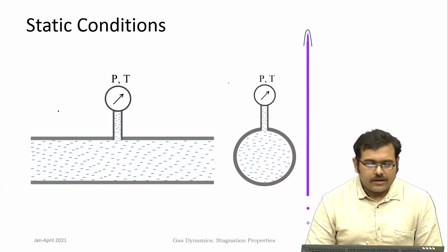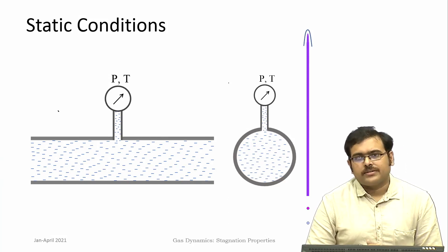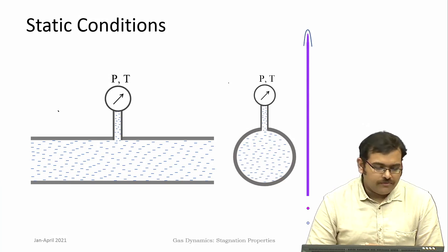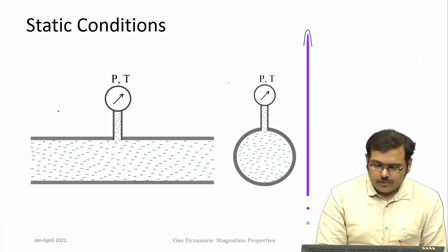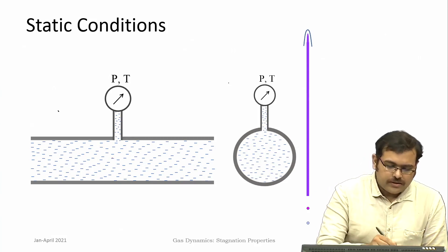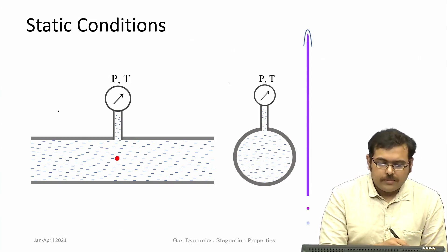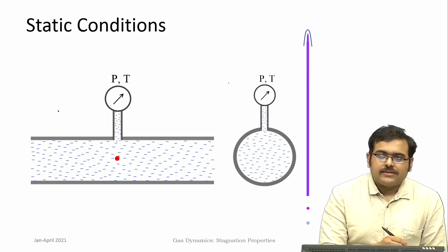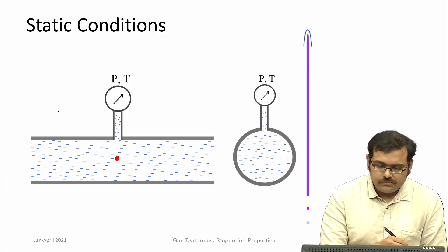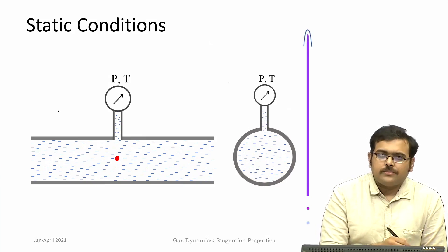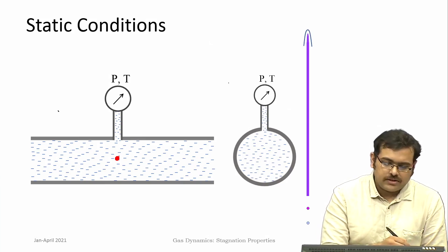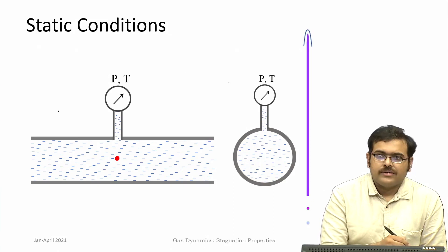Static conditions are the normal conditions of pressure and temperature in the flow in a fluid flow. For example, you have a fluid flowing through a duct, and at any local particular point if I measure the pressure and temperature, that is the static pressure and temperature. The measurement of these conditions will happen in a direction which is parallel to the flow direction.